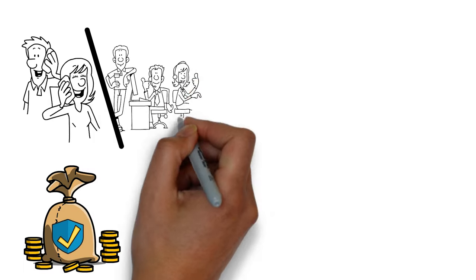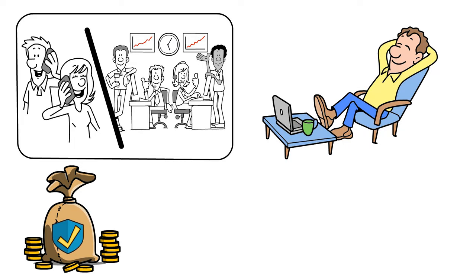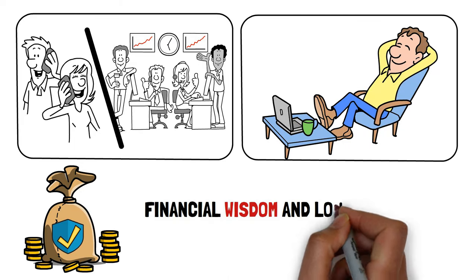This discreet approach to wealth allows them to maintain financial stability and security while avoiding unnecessary attention. It's a smart strategy that sets them apart in a world obsessed with outward displays of affluence. Their understated lifestyle speaks volumes about their financial wisdom and long-term perspective.